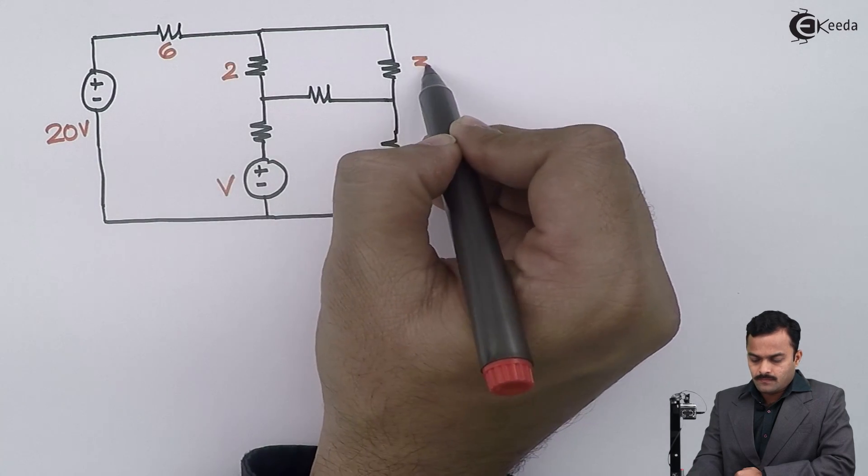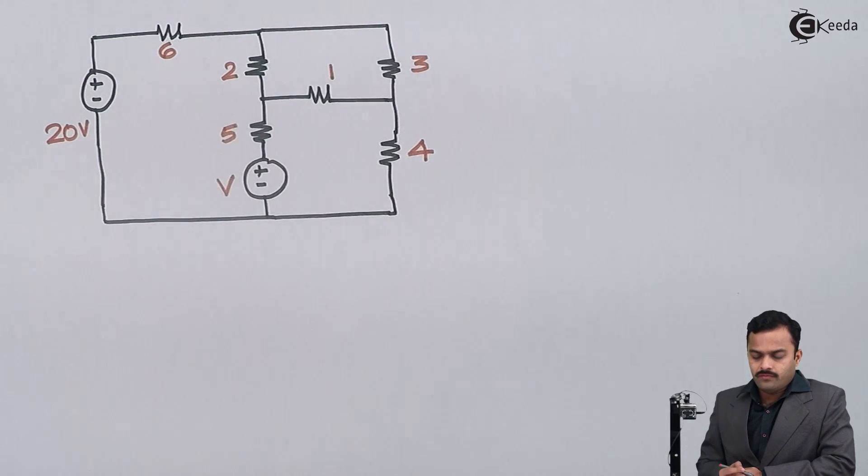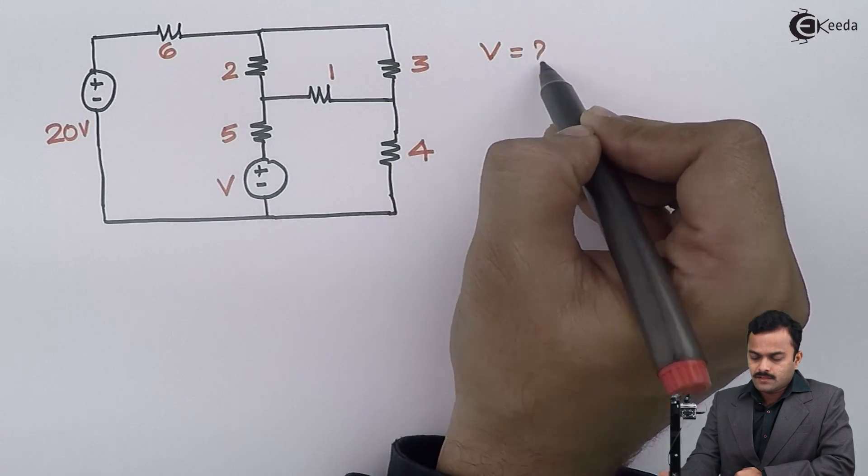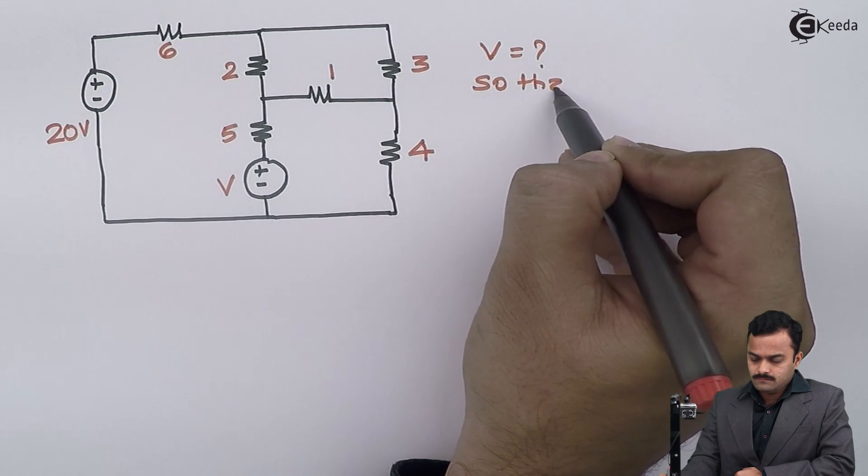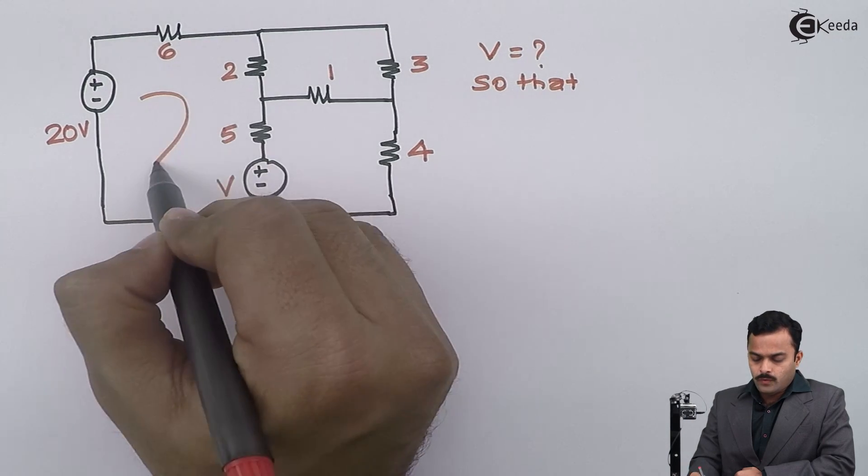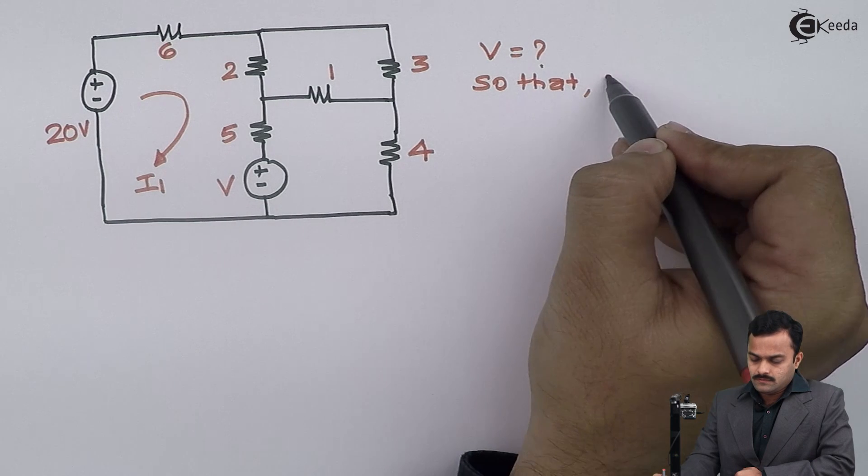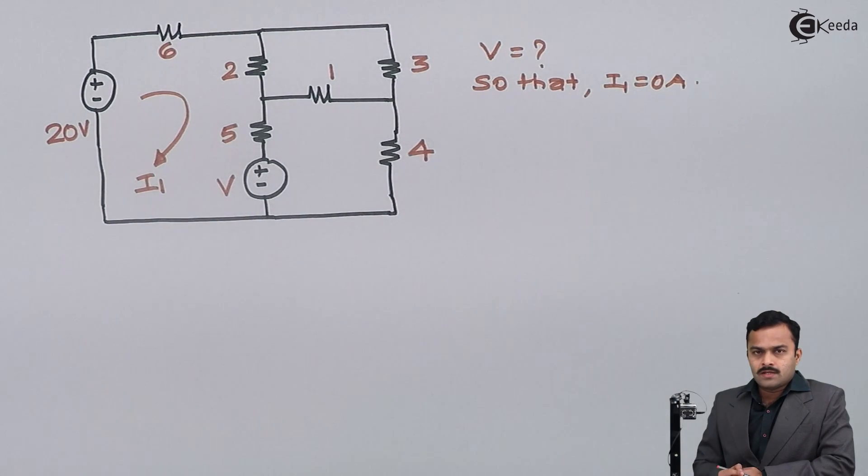We need to find out the value of this V so that current flowing through loop 1, which is I1, equals 0 ampere. So therefore the problem is a little bit different than that of earlier problems.